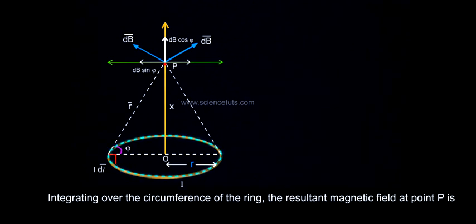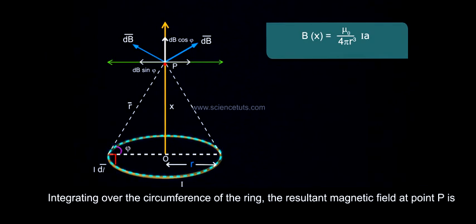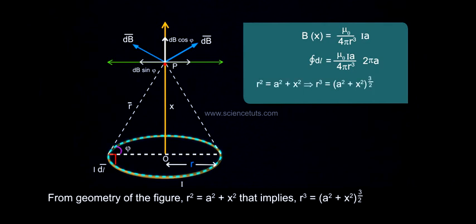Integrating over the circumference of the ring, the resultant magnetic field at point P is Bx equals mu_0 by 4π r³ i a integration of dl equals mu_0 i a by 4π r³ into 2π a.